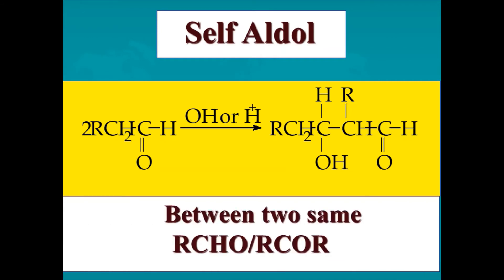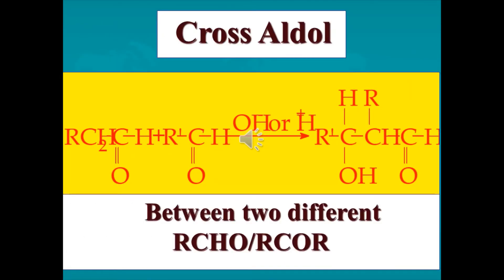What is self aldol? When two same aldehydes or ketones react with each other, it is called a self aldol reaction, giving only one product — almost always a beta-hydroxy aldehyde. What is cross aldol? When two different aldehydes or ketones react with each other, we get either one product or four products, depending upon the presence of alpha hydrogen. This is called cross aldol.